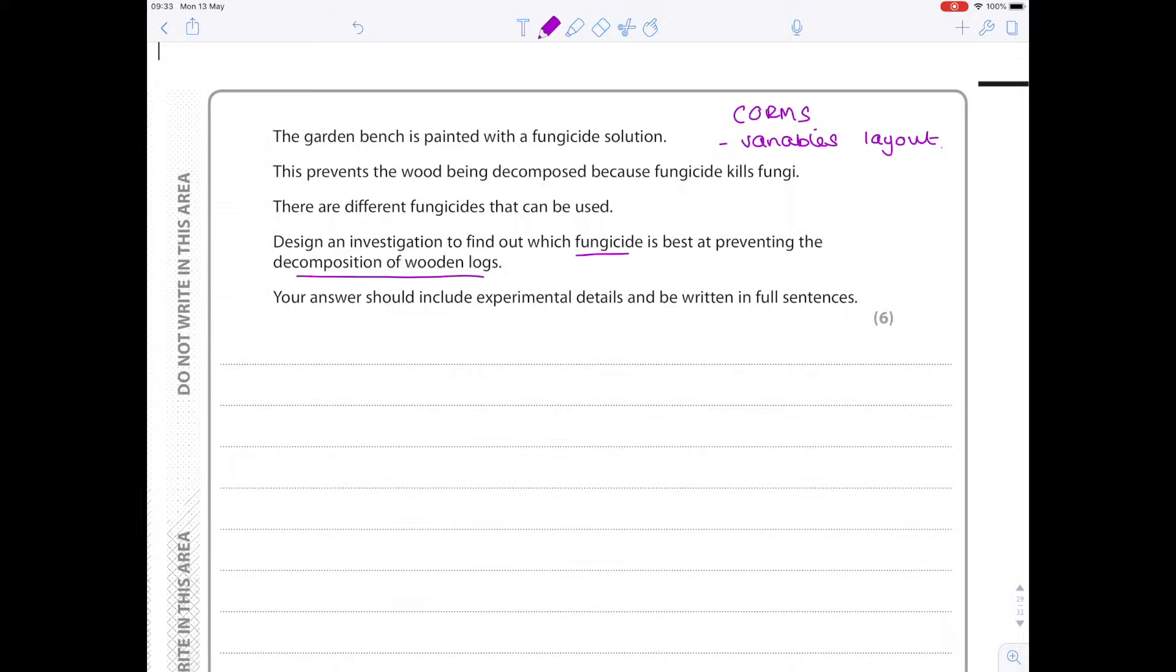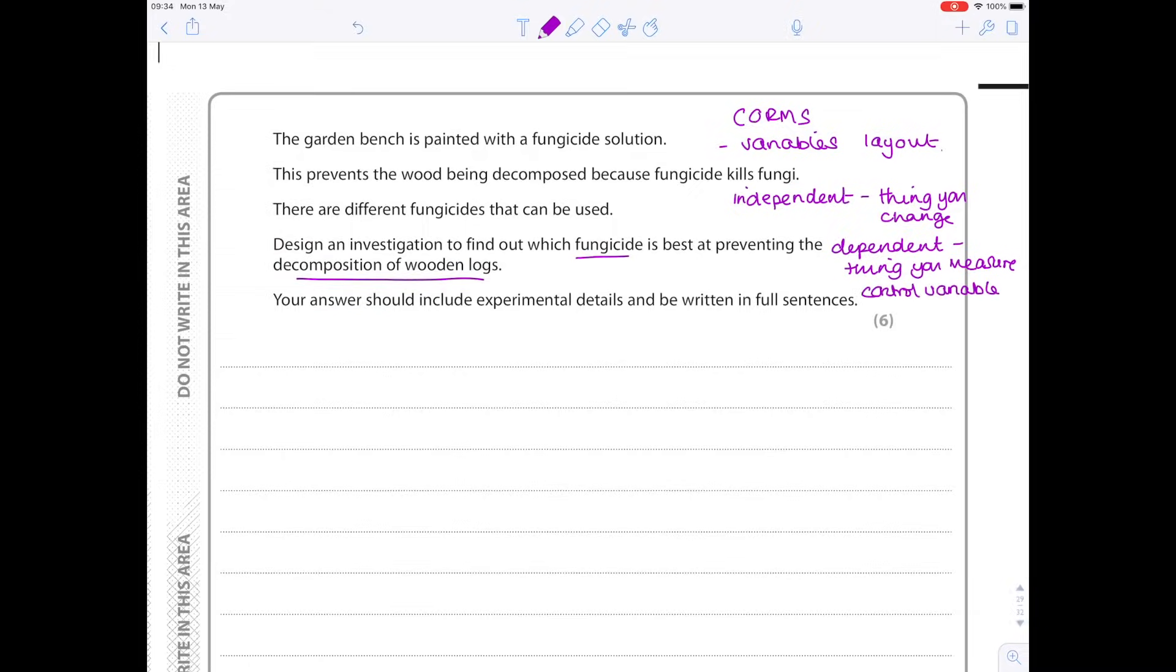I'm going to start by writing my variables. Just first of all remember that an independent variable is the thing you change, the dependent variable is the thing you measure. If you're struggling to remember this, Google the variable song. It goes to the tune of if you're happy and you know it clap your hands, and that will really help you remember. Lastly control variables, the things you keep the same. So let's ask ourselves what are we changing here. Well we're going to be changing the type of fungicide. So I will use a variety of different types of fungicide.